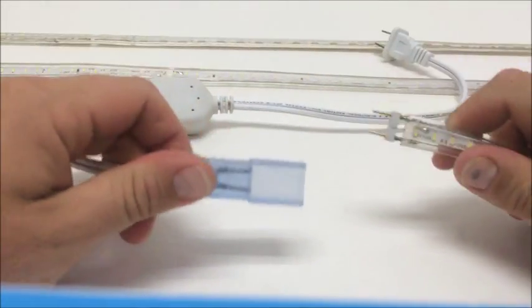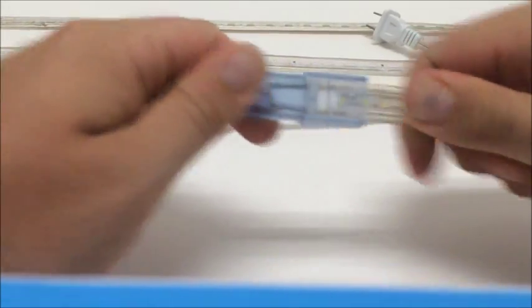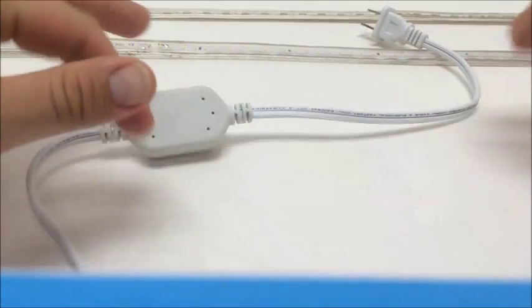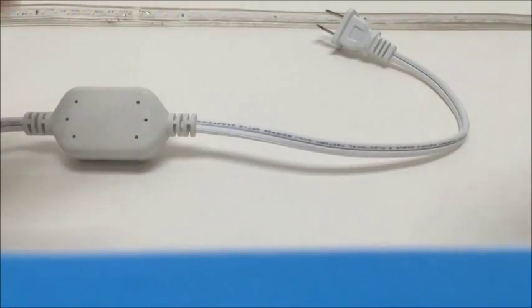And then, you're going to take your two pins and put them into the two pins on the power cord. Slide them right in there. Boom. You're connected. Then you just take this plug, put it right into the wall, and voila, there you have it.